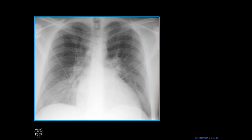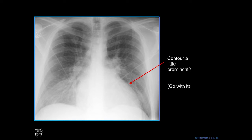Here's a new chest radiograph — it's abnormal. Is this contour a little bit too prominent? You have to go with it because it doesn't show up very well and it's something that's hard to see on a frontal radiograph, but trust me — if you look elsewhere there are other abnormalities, but this border is a little too round, a little too concave.